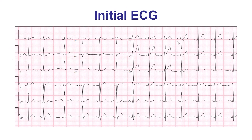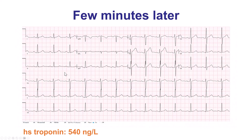This is the initial EKG that shows anterior ST-segment elevation with reciprocal ST-segment changes in the inferior leads. And this is the same patient a few minutes later, after sublingual nitroglycerin, the chest pain resolved.